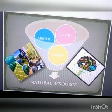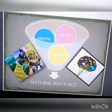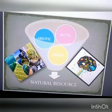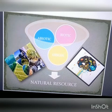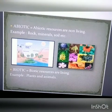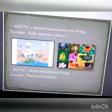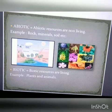Based on their origin, resources are classified as biotic and abiotic. Abiotic resources are non-living things — examples are rocks, minerals, soils, etc. Biotic resources are living things like plants and animals.